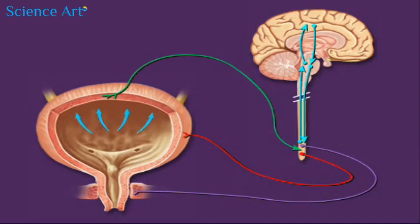The sensory signals to the sacral region of the spinal cord also stimulate ascending pathways to the pons and cerebrum, which results in a conscious desire to urinate.